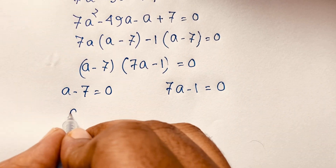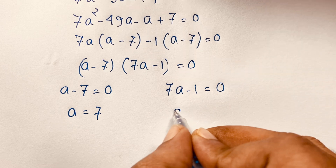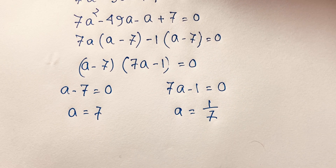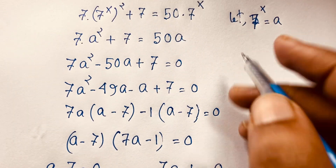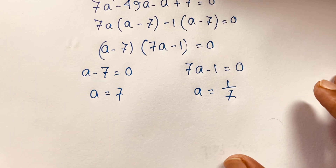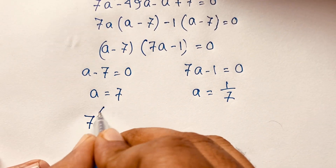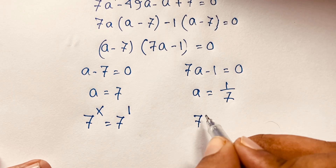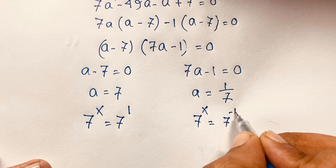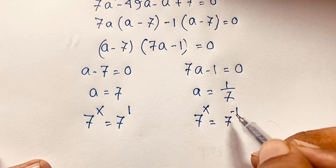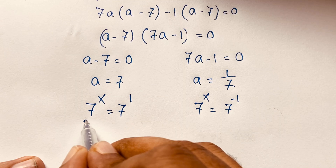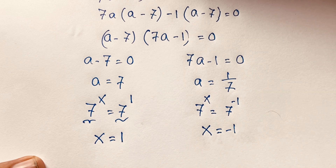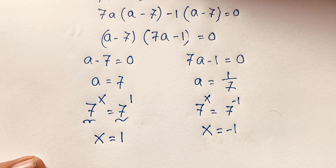So a equals 7 or a equals 1 over 7. Remembering that we let 7^x equal a, substituting back: 7^x equals 7 to the power 1, giving x equals 1; and 7^x equals 7 to the power negative 1 (which is 1 over 7), giving x equals negative 1. These are our final answers.